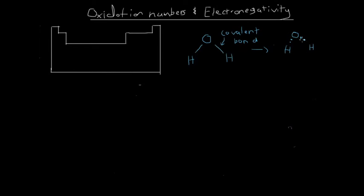Something you may have noticed is that these two electrons here are slightly closer - I've drawn them slightly closer to the oxygen atom than to the hydrogen atom. This is because the oxygen basically has a higher tendency to attract electrons towards it. This property of the oxygen atom is what we call its electronegativity. So the oxygen is more electronegative than the hydrogen atom, and for that reason it attracts the electrons more, and these electrons end up slightly closer to the oxygen atom.